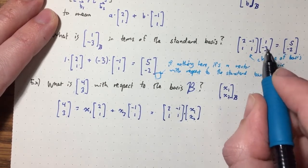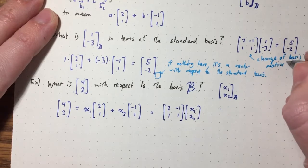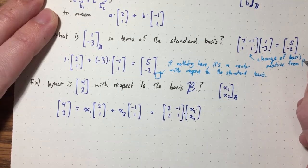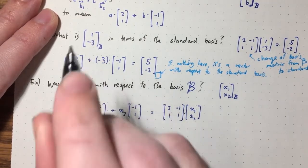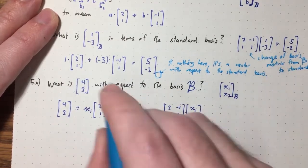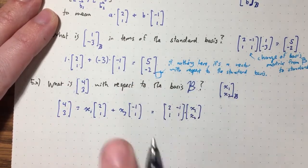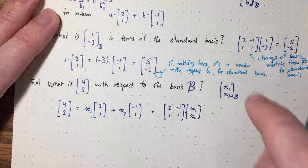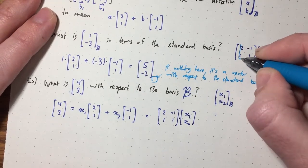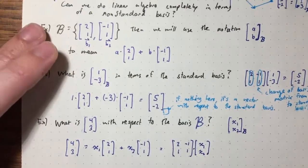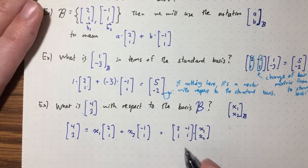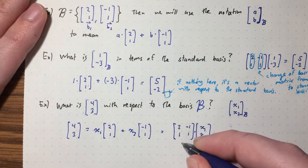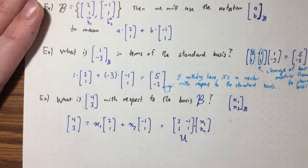What does this change of basis matrix change? It's changing from basis script B to the standard basis. And notice: we just have the basis vectors as the columns! I'll call this matrix U. So U is the matrix with columns (2,1) and (-1,1), and it converts a vector with respect to B into a vector with respect to the standard basis.